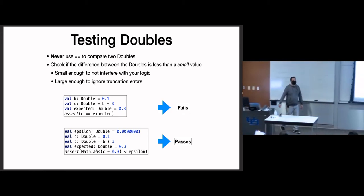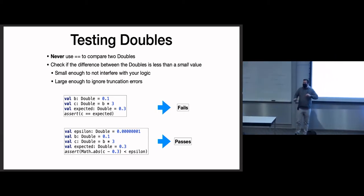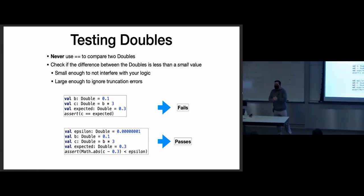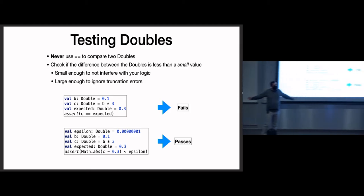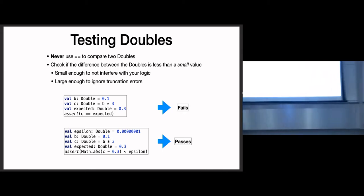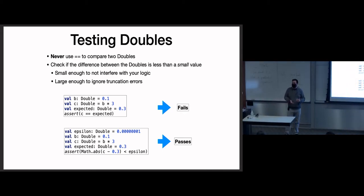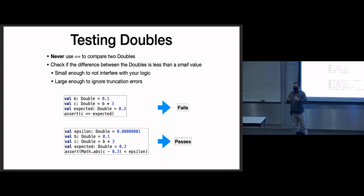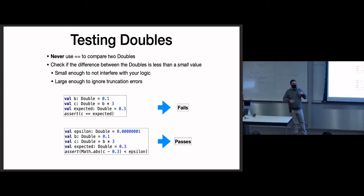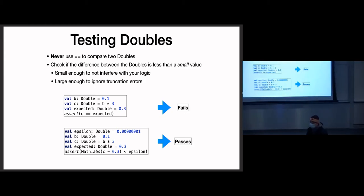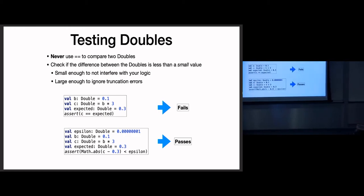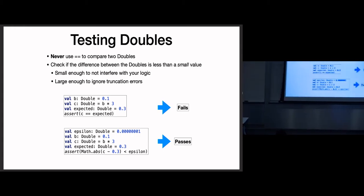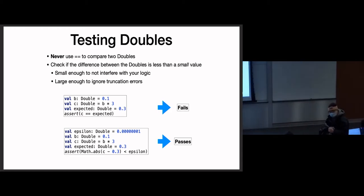Unit testing doubles: never ever use == to compare two doubles. Your Task 2 expected deadline is Wednesday morning. The big objective of Task 2 is writing the tests. When a method returns a double and you use == to check equality, you'll probably pass your own tests since you computed things the same way in both your code and your tests. But when you submit to AutoLab you'll almost certainly get 'failed a correct solution.'